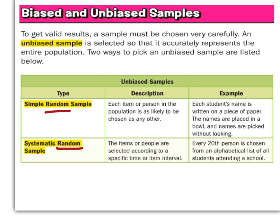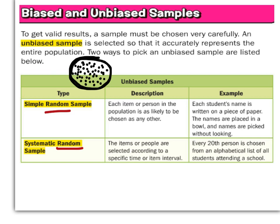The first kind is a simple random sample. Imagine a circle with a group of people. We're going to choose from those people to take a survey or test a product. Any one of them can be chosen at any time, done randomly — with an electronic device, eeny meeny miny moe, or drawing numbers out of a hat. Each student's name is written on a piece of paper, put in a bowl, and picked without looking.